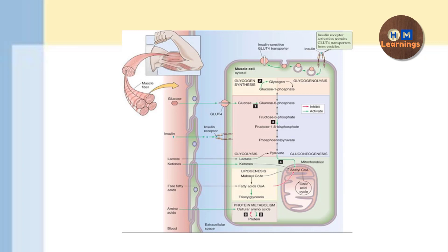So insulin is present in the blood and now it will act via the insulin receptor on the muscle cell. After binding to the insulin receptor, the insulin is going to trigger about four main actions inside the muscle.